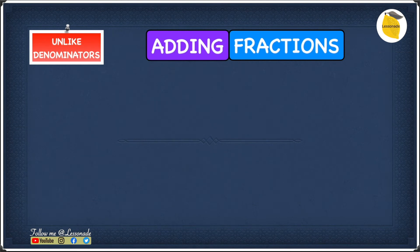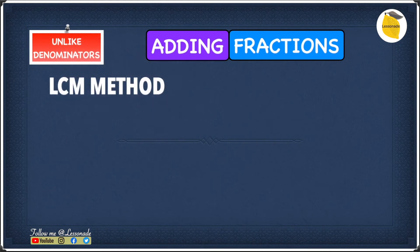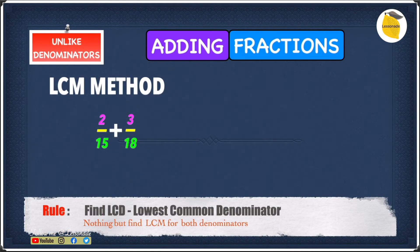Now let's see how to add fractions with unlike denominators using the LCM method. The example we have is 2 over 15 plus 3 over 18.